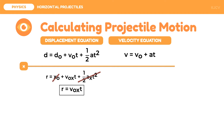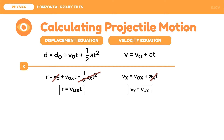For the x component velocity equation: vₓ = v₀ₓ + aₓ·t. Since we do not have acceleration at the x component, aₓ·t equals zero. Thus, vₓ = v₀ₓ. This velocity equation describes the constant velocity at the horizontal component.